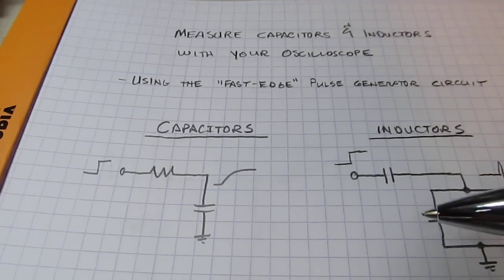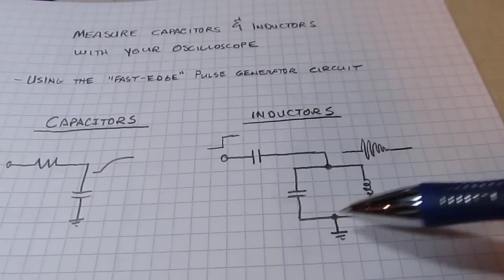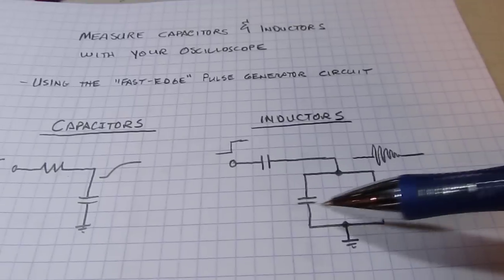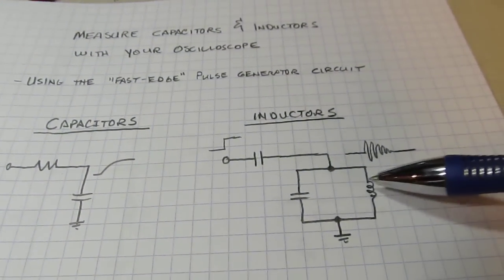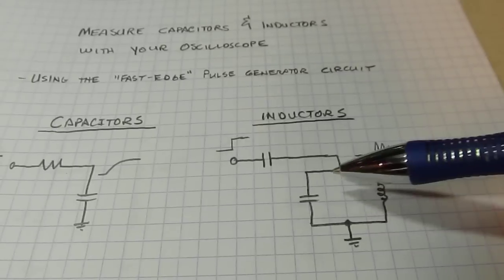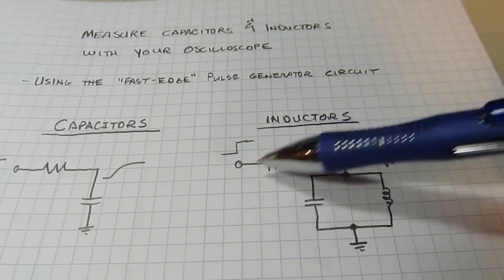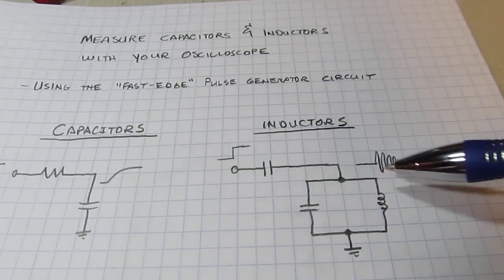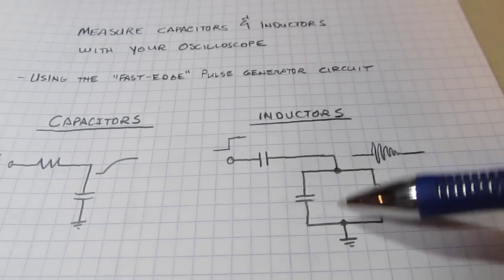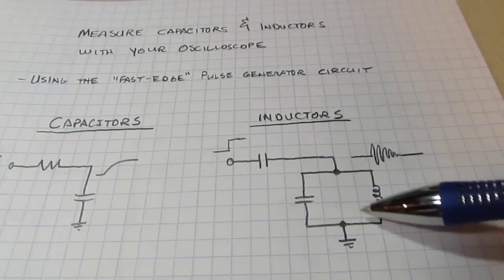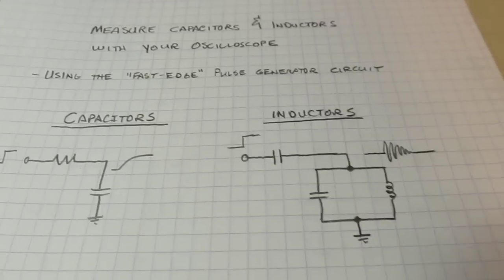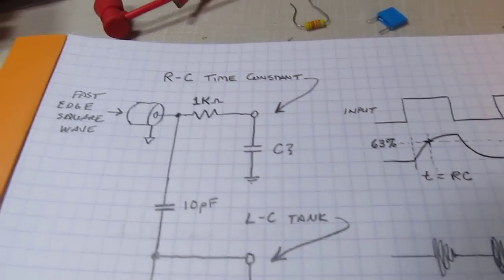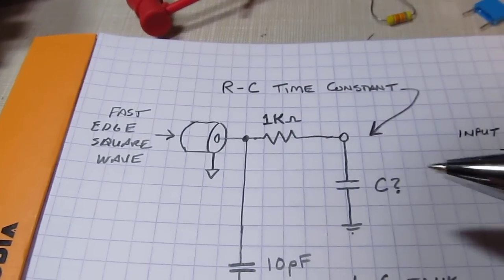Similarly for the inductors, we'll form a tank circuit with a known capacitor and our unknown inductor. Then hit that with the high frequency content of this edge and this circuit will ring at its resonant frequency. Knowing the resonant frequency and this capacitor value, we can calculate out the inductor. Let's take a look at what the circuit actually looks like and then how I built it.